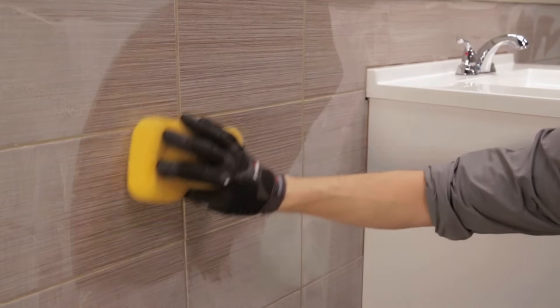Rinse the sponge often, using as little water as possible so as not to dilute the grout. Remove as much milky residue from the tiles as you can.